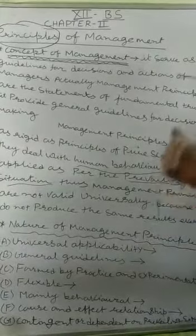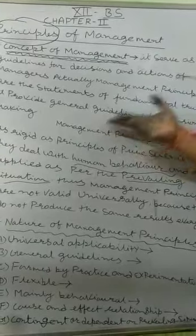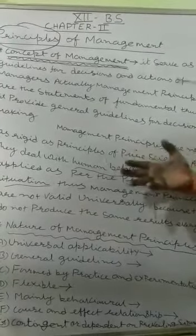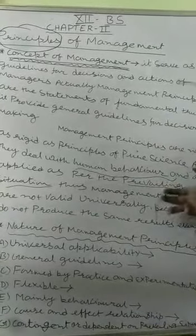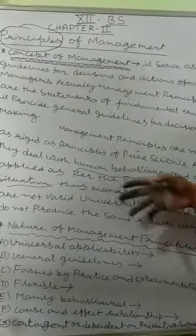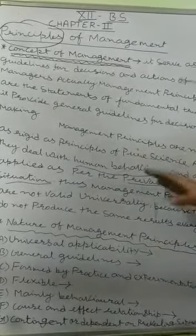So, the Principles of Management provide general guidelines for managers to make decisions and take action. They follow fundamental truths as general guidelines. Unlike pure science principles, they are not rigid because they deal with human behavior in different situations. Their universal applicability and results are not the same, as they vary across different people, work, and operations.